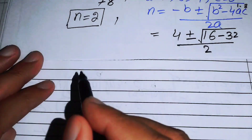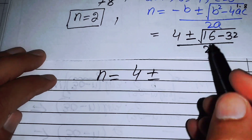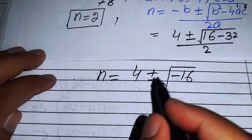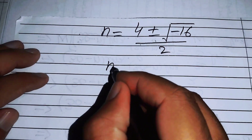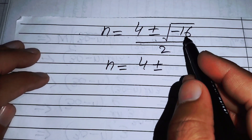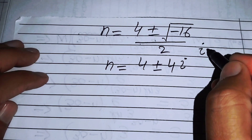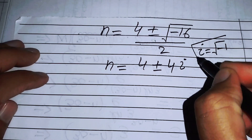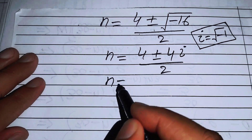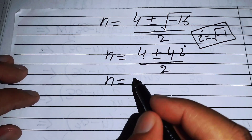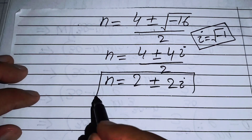Simplifying, 16 minus 32 equals minus 16, so we have n equals (4 ± √(minus 16)) over 2. The square root of 16 is 4 and the square root of minus 1 is iota (i), so √(minus 16) equals 4i. This gives n equals (4 ± 4i) over 2, and finally n equals 2 ± 2i. These are the two complex roots of the equation.